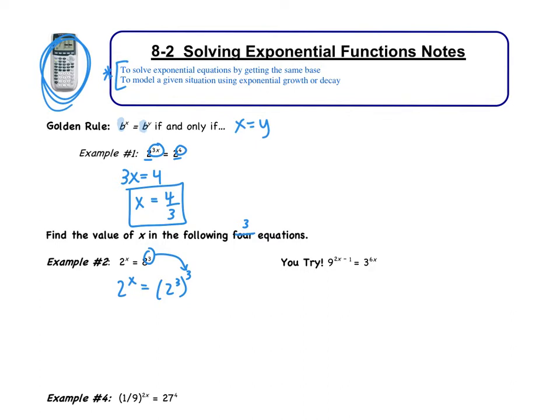Now do we remember a power to another power? What do I do with that? I multiply. So this is really 2^9. Now the golden rule applies. The two sides of this equation are only going to be equal if the exponents are equal because the bases are the same. Bases are the same. I can set my exponents equal then. So x = 9.